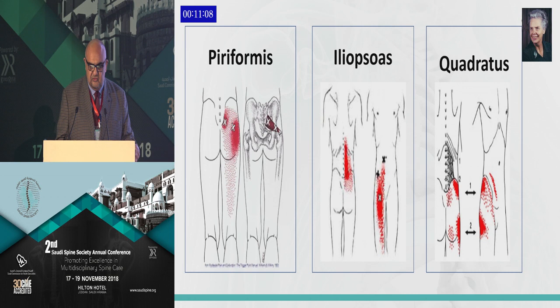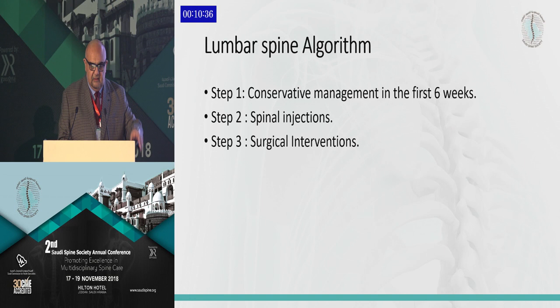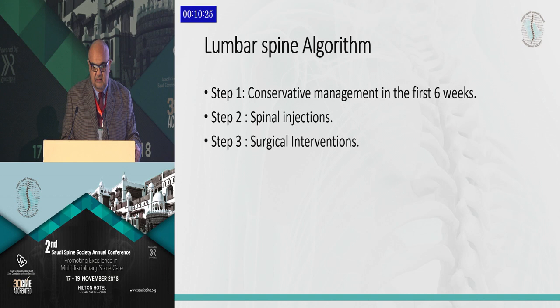This is Jeanette Travelle, the guru of myofascial pain. She used to be JFK's private doctor, was a cardiologist, and treated a lot of chest pains in the ER by injecting procaine in the chest wall. The word 'algorithm' was developed by al-Khawarizmi, one of the Islamic scholars. As for the lumbar spine algorithm, step one is conservative measures, followed by spinal injections, and step three is surgical interventions.